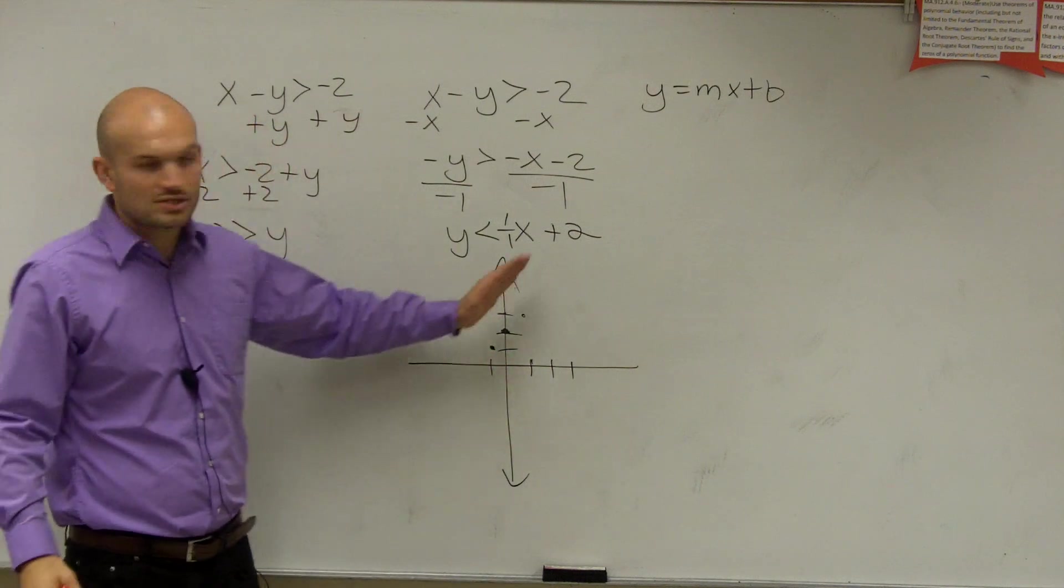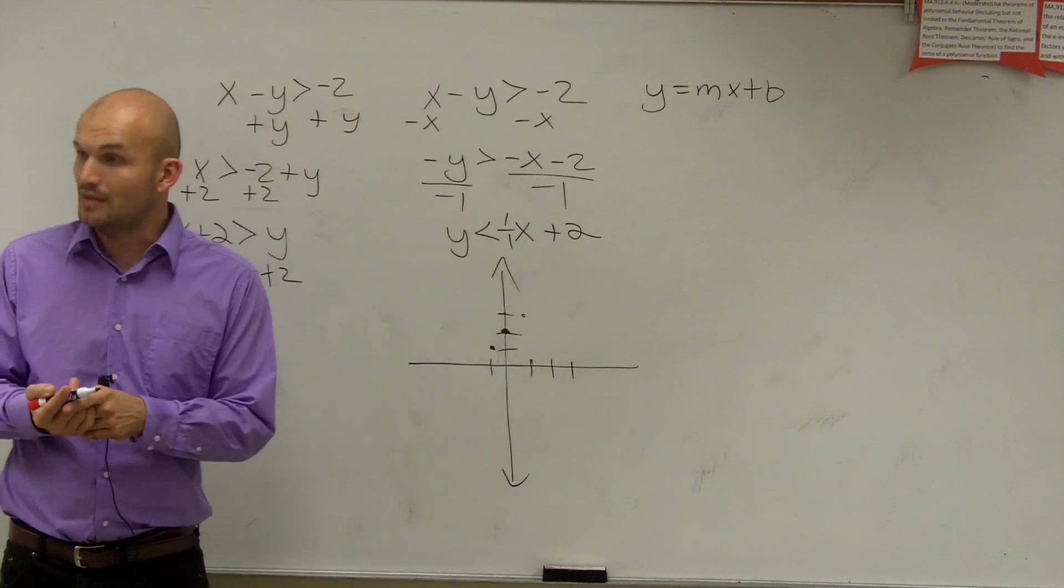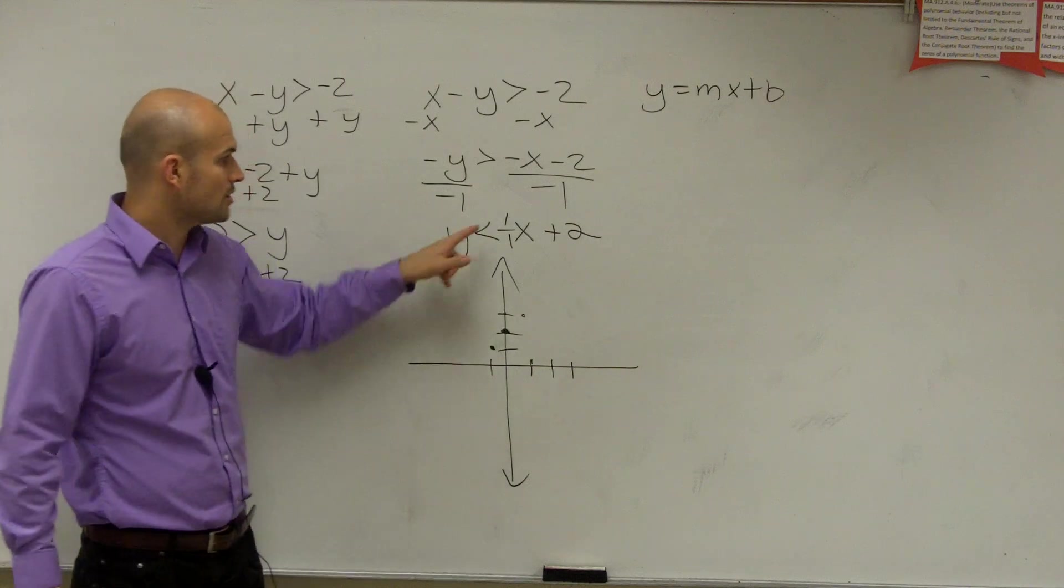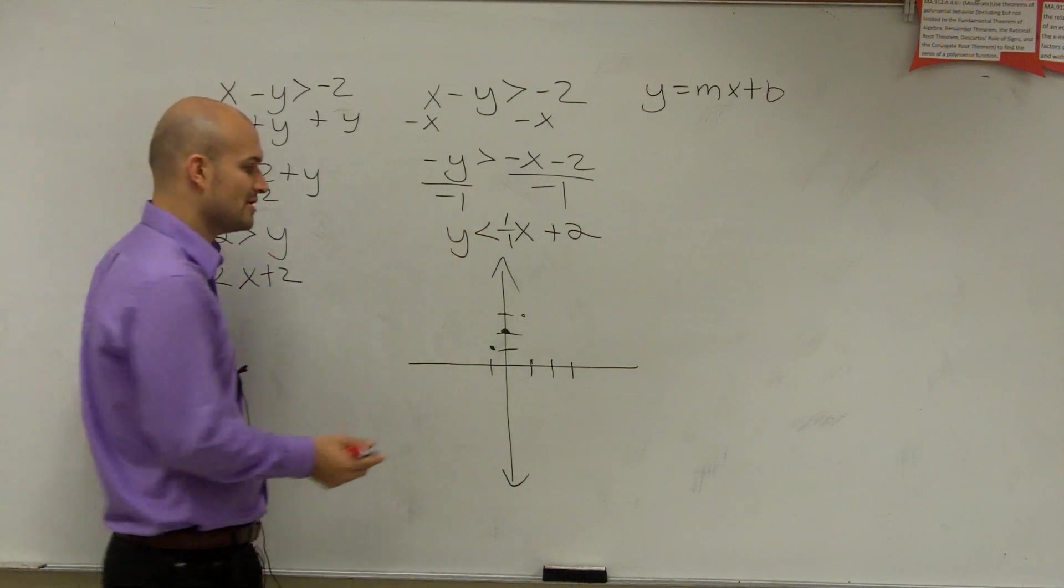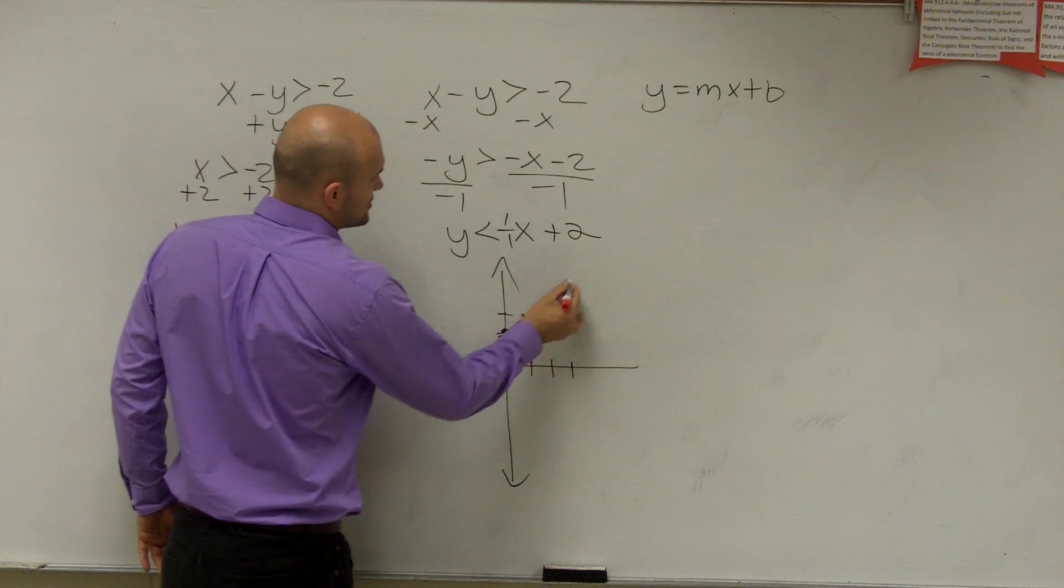Then you need to determine, so once you have your slope, you need to determine is it a dash or a solid line. You could use a test point. Or you can just look at, since it's now less than and not less than or equal to, I have a dashed line.